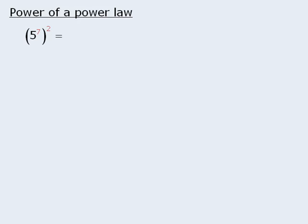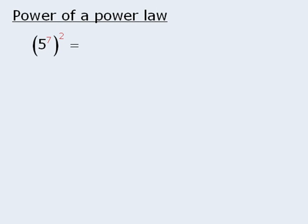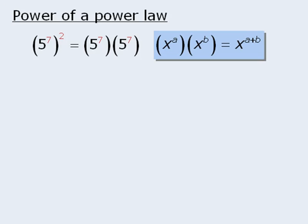The last law in this lesson is the power of a power law. In this example, we are taking 5 to the power of 7 and raising it all to the power of 2. Since we are raising 5 to the power of 7 to the power of 2, we can rewrite this as the product 5 to the power of 7 times 5 to the power of 7. Since we have the product of 2 powers, we can apply the product law to see that this equals 5 to the power of 14. So 5 to the power of 7 all to the power of 2 is equal to 5 to the power of 14.